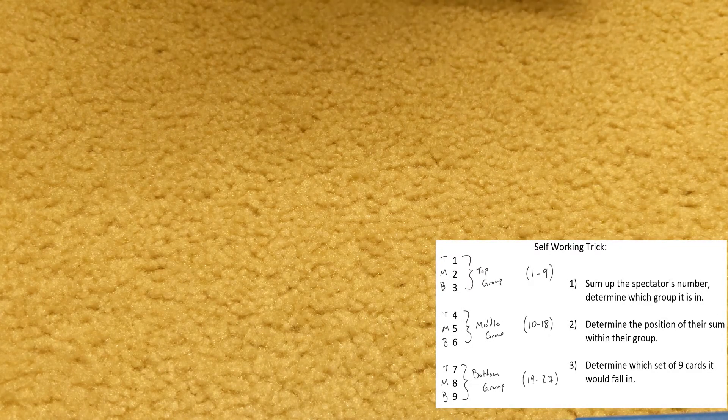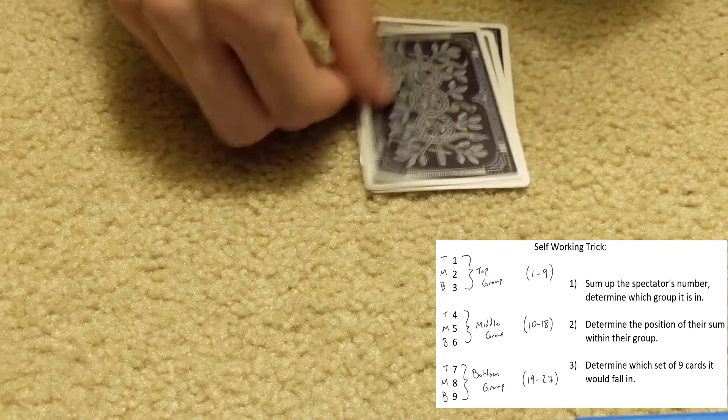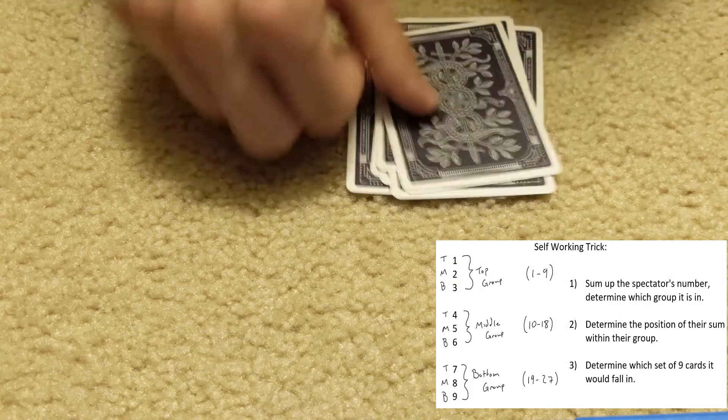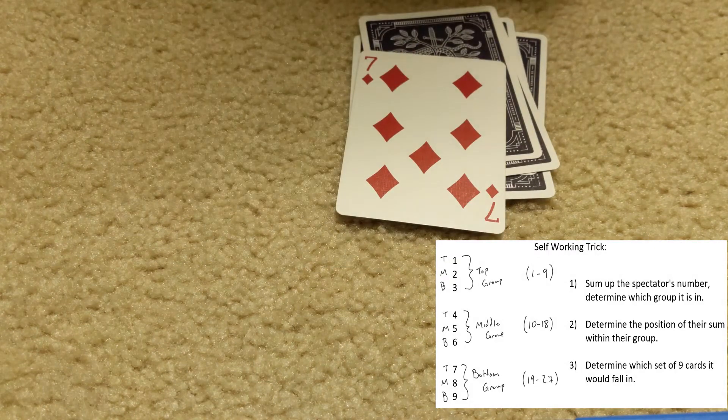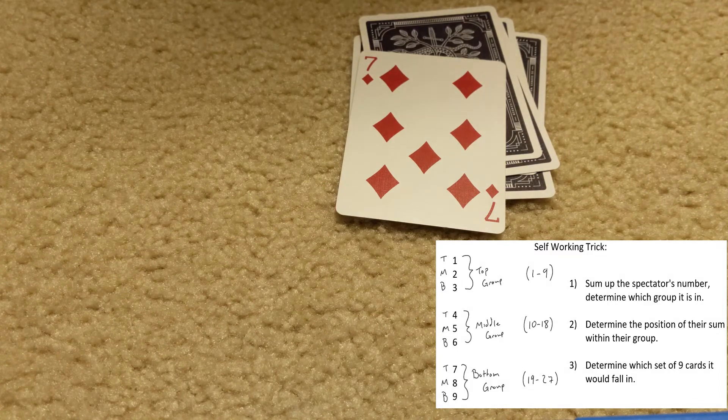And now you can sell the trick to the spectator however you like and use their number. So in this case, we would count 1, 2, 3, 4, 5, 6, 7, 8, 9, 10, 11 cards in. And we would see that the card has been forced to be their card, the Seven of Diamonds.